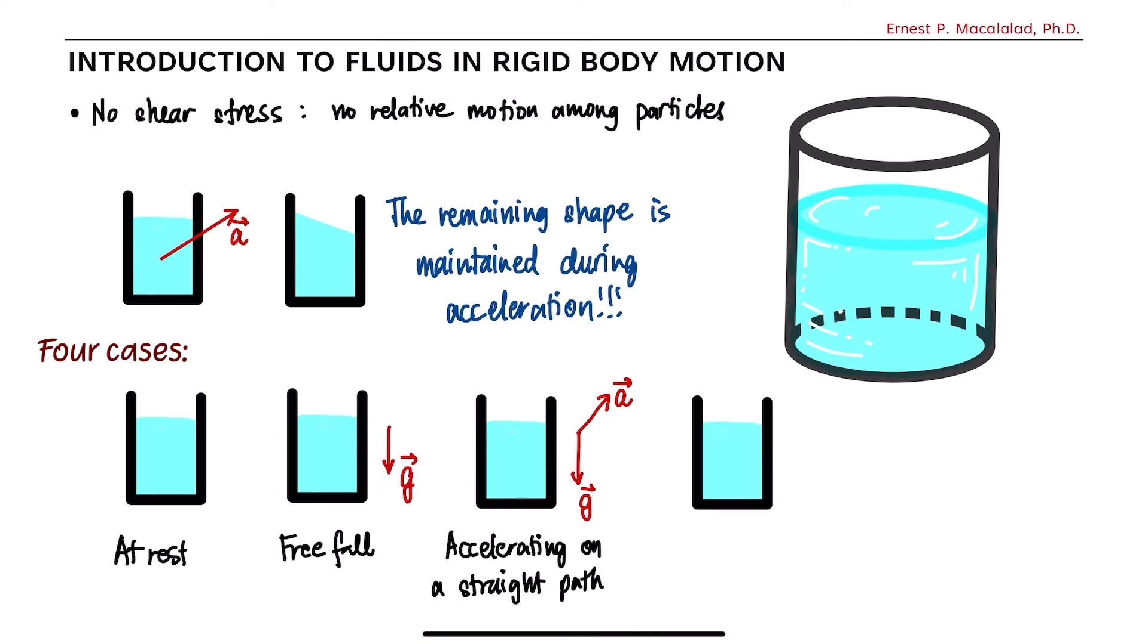And in the last one, what will now happen if the fluid undergoes rotation together with a cylindrical container? So in this case, because of the fact that the particles within the fluid will undergo circular motion as the cylindrical container rotates, therefore each fluid will have a radial acceleration. You normally know this acceleration to be the centripetal acceleration, ending always towards the center. And we will consider that type of acceleration together with your gravitational acceleration.